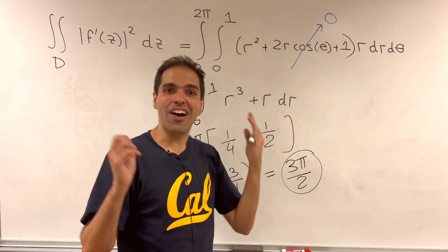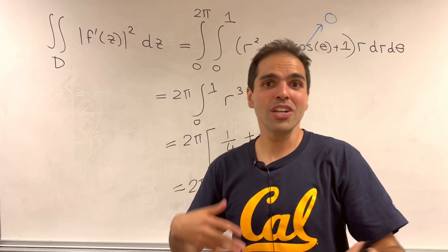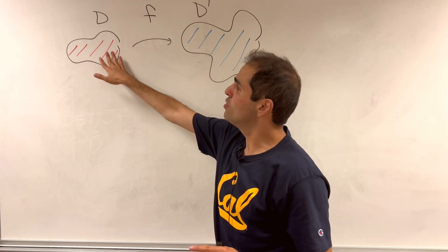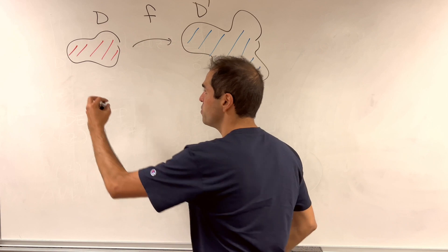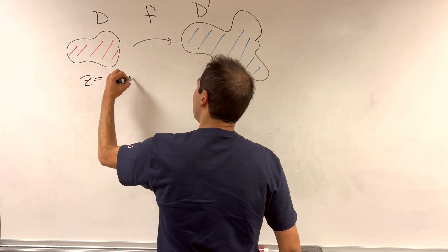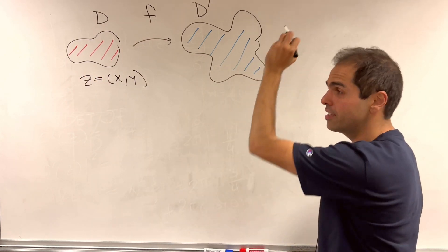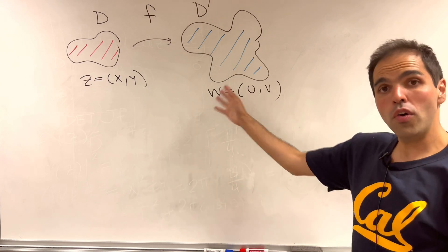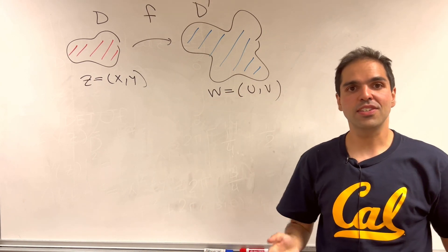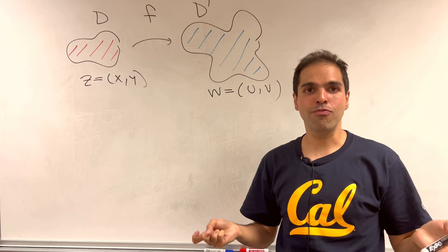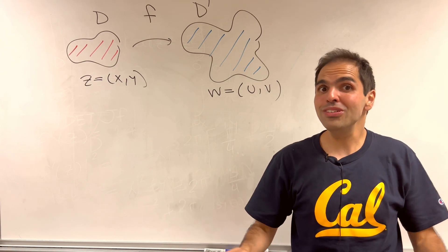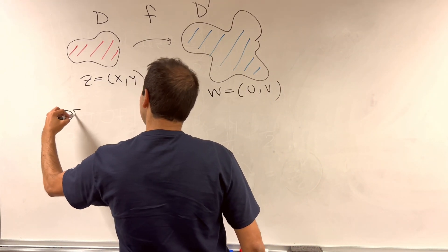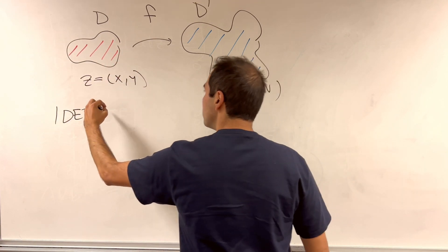And this is just based on the Jacobian formula, which I'll derive now. So how come, when, if you start with the region D in terms of, let's say, variables x, y, and you apply f to it to get a region D prime in terms of u, v? How come, in that case, the Jacobian is just absolute value of f prime squared? Well, this has to do with some basic complex analysis, because the Jacobian is just a determinant of the derivative matrix.